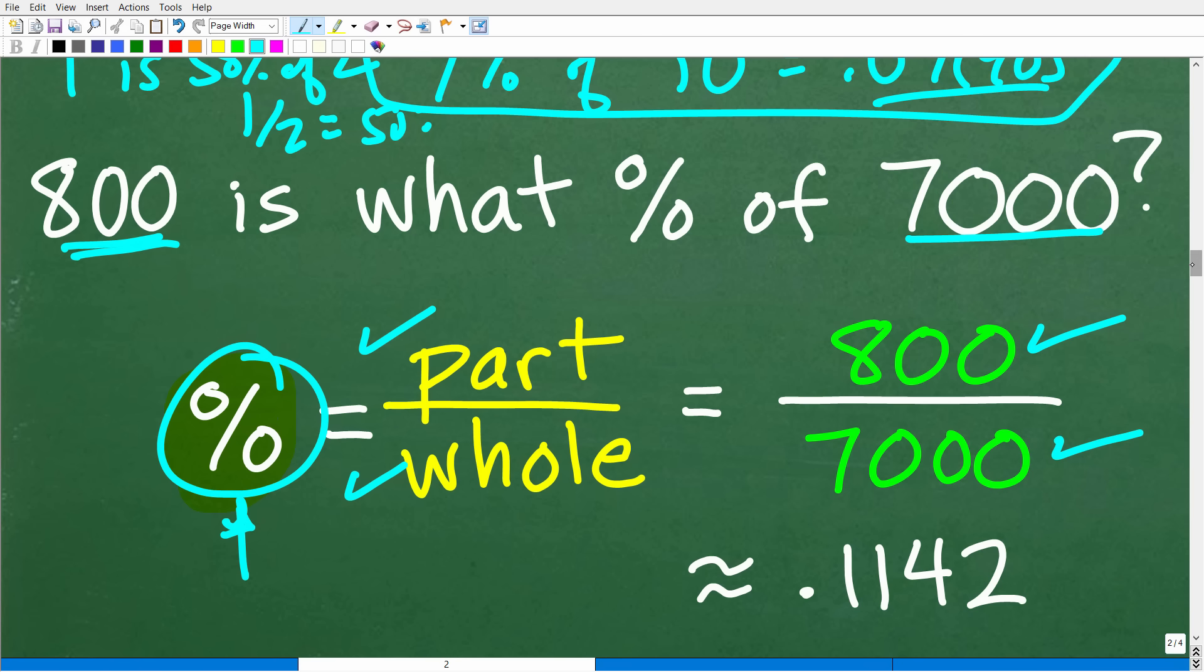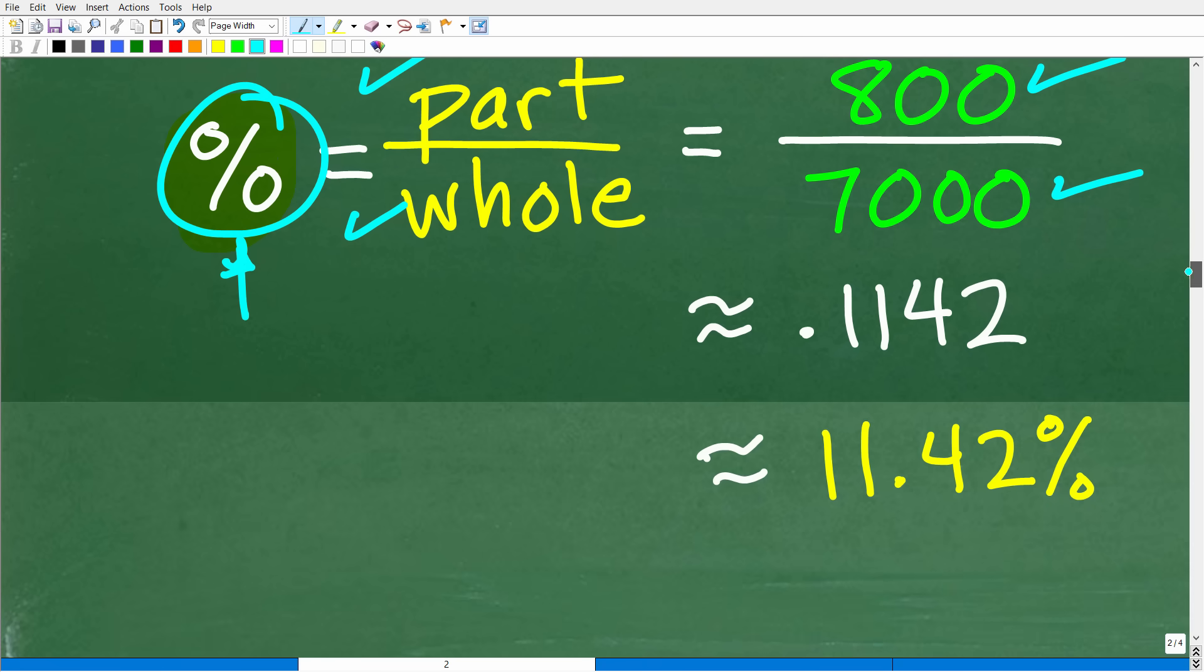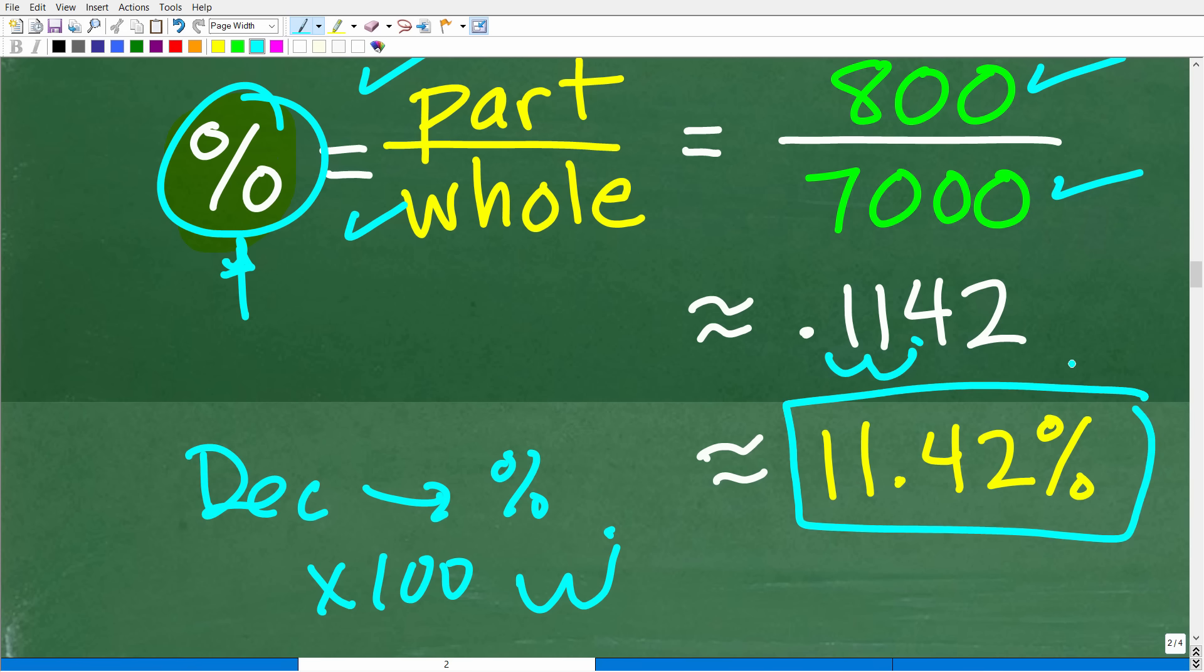Now, this is approximately because I did round off a bit, but we want the percent, okay? But we have a decimal, so we have to convert or write this decimal as a percent. And how do we change a decimal to a percentage? Well, what we need to do is multiply by 100 or move the decimal point over two places to the right. So if we take this 0.1142, move that decimal point over two places to the right, we're going to get 11.42%.